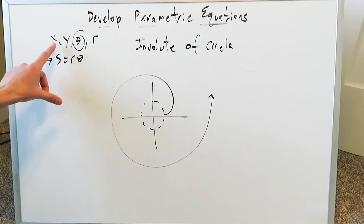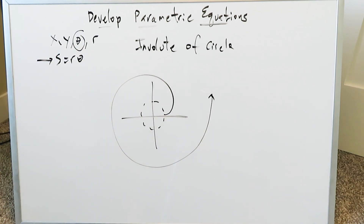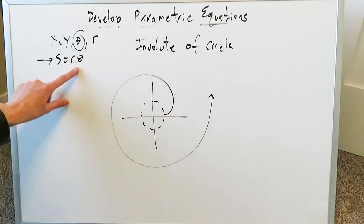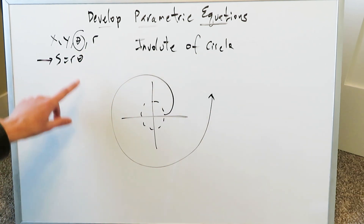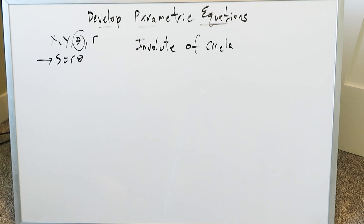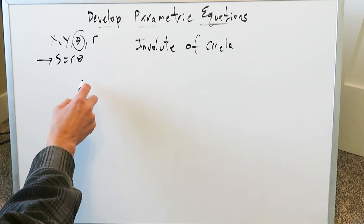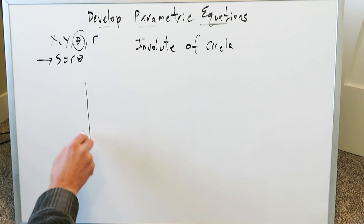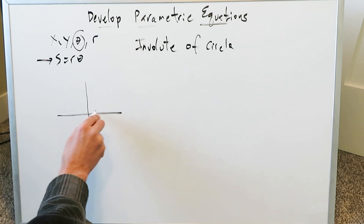When you develop those equations, the variables X, Y, and theta will come about. Theta will be our parameter. You'll also see the radius, but that's more of a constant. You also have to remember S equals R theta, the formula for arc length determination, because that comes into play. The best way to proceed is to view everything with regards to pre-calculus so we keep it more manageable — that's the goal.